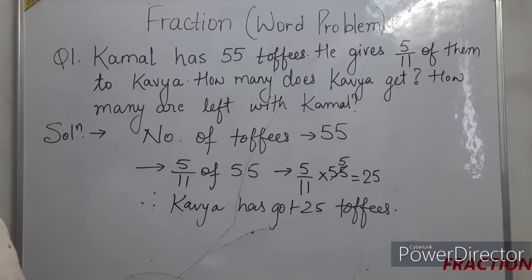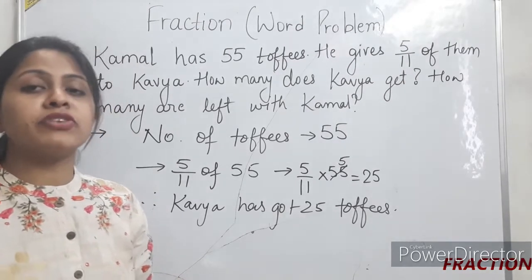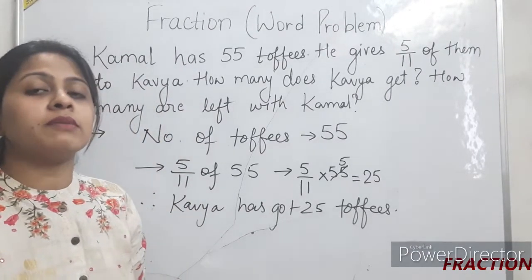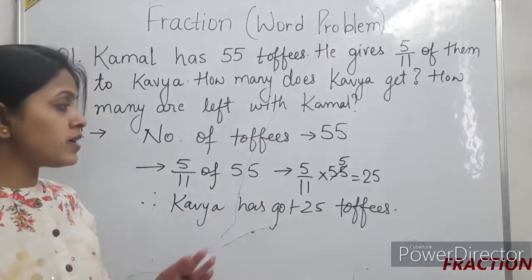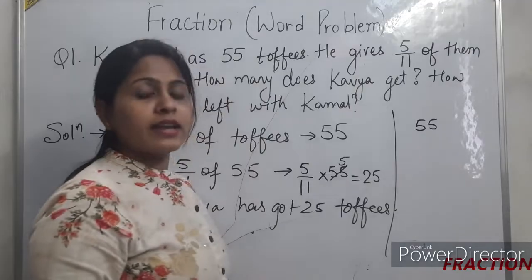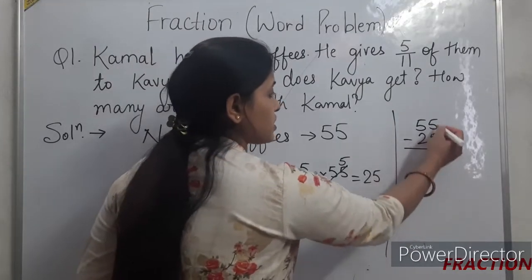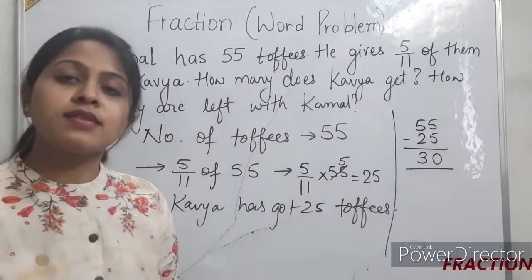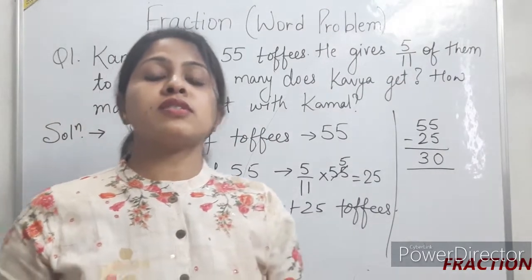The second part of the question is: how many toffees are left with Kamal after giving to Kavya? In the beginning Kamal had 55 toffees and he gave 25 to Kavya. So we do the subtraction: 55 minus 25 equals 30. So 30 toffees are left with Kamal.